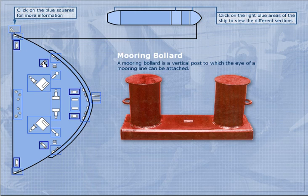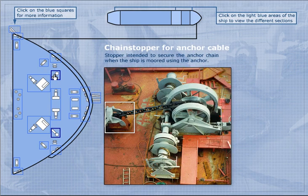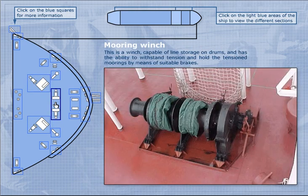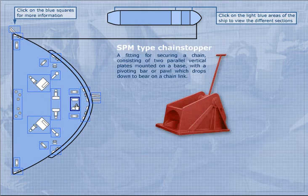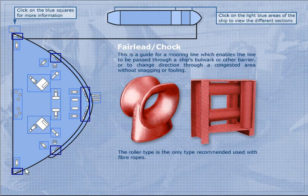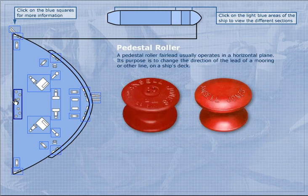Here you can find a mooring bollard. A mooring bollard is a vertical post to which the eye of a mooring line can be attached. Here is a chain stopper for anchor cable, and here is the anchor mooring winch. Here you can also find a mooring winch and an SPF-type chain stopper.